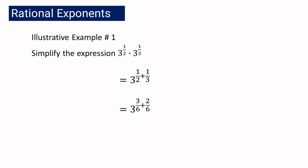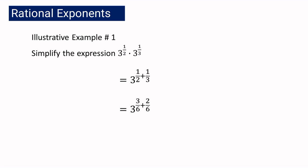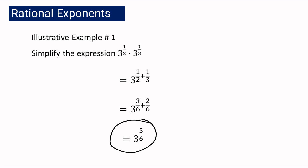And if we simplify, we are going to write 1 half and 1 third as similar fractions, wherein the LCD is 6. We have 6 divided by 2 times 1, that is 3. And then we have 6 divided by 3 times 1, that is 2. So we have here 3 raised to 3 over 6 plus 2 over 6. We already have similar fractions, so you are just going to copy the denominator and add the numerators. We will be having 3 raised to 5 over 6. And this is our answer.